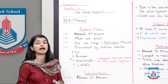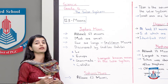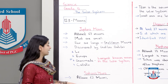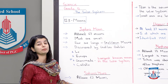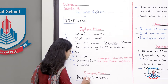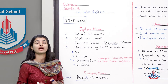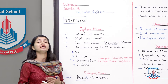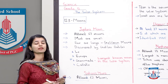Aage chalte hain Saturn ke baare mein. Saturn ke at least 62 moons hain. Jupiter ke 67 thay, iske 62 hain, aur hum baat yeh karte hain ke isko 'at least' isliye kaha jata hai kyunki kam az kam 62 hain abhi tak identify, but it is highly possible ke 62 se kaafi zyadha moons present hain in Saturn as well.